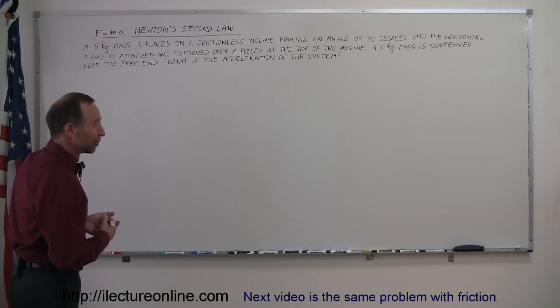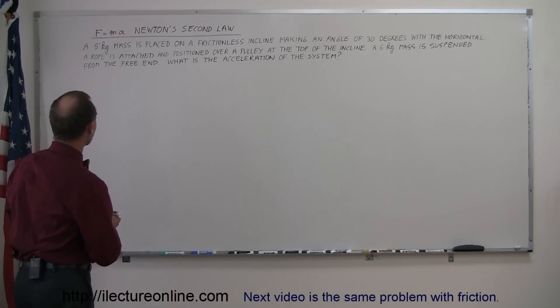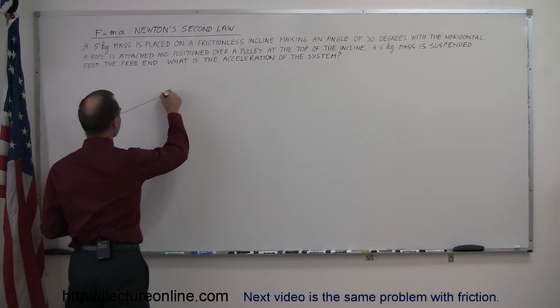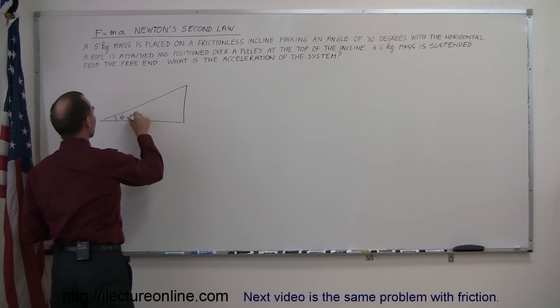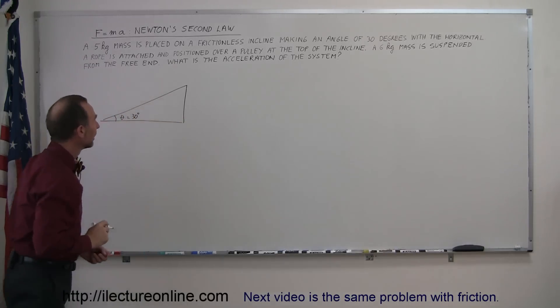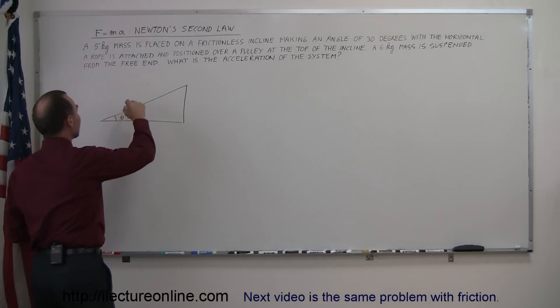After you read a problem like this, you may not really know what's going on, but if you carefully make a drawing of this, it makes a lot more sense. So let's do that. We have an inclined plane making an angle of 30 degrees with the horizontal. On the inclined plane, we place a mass.